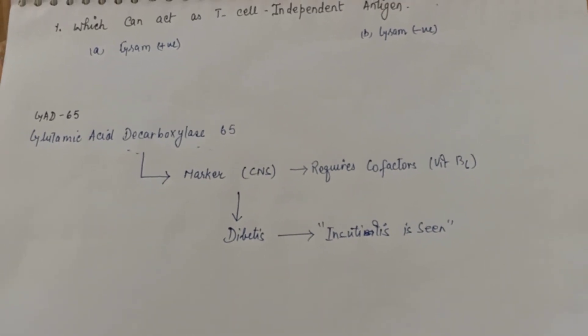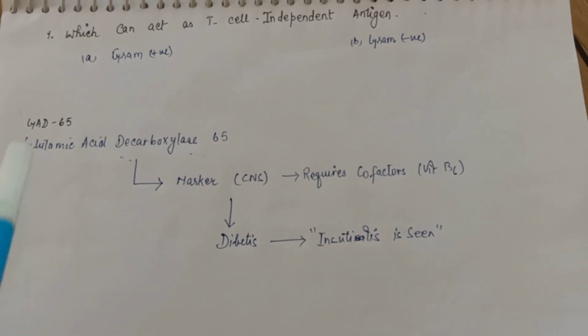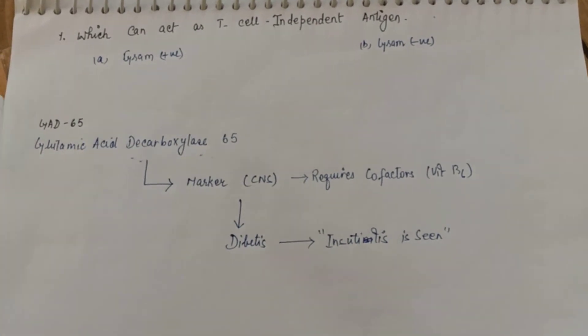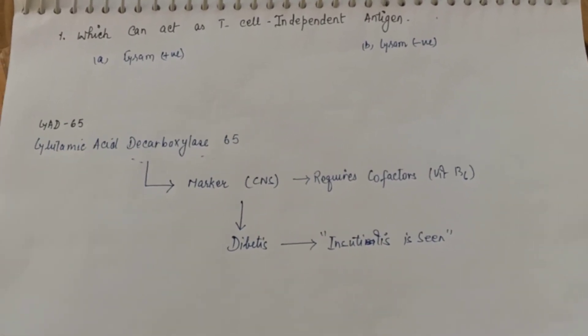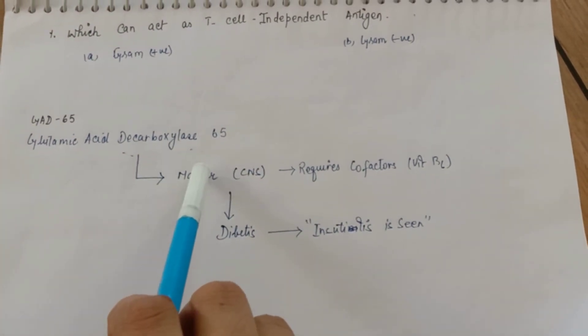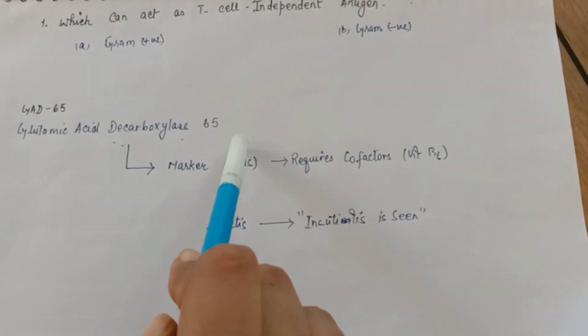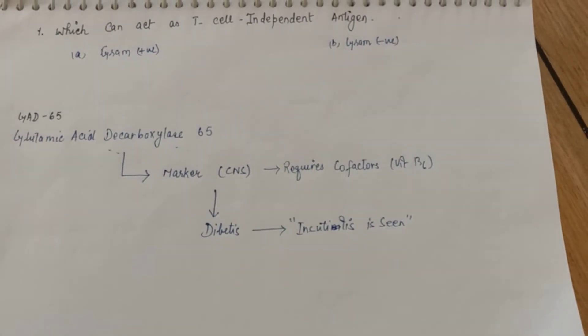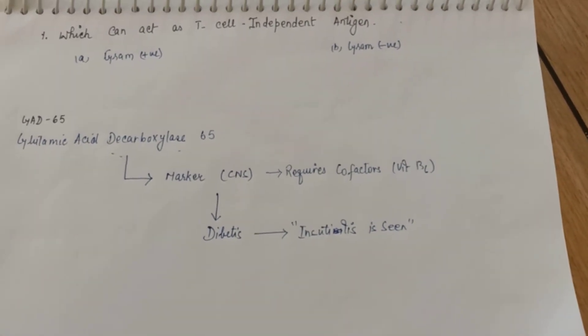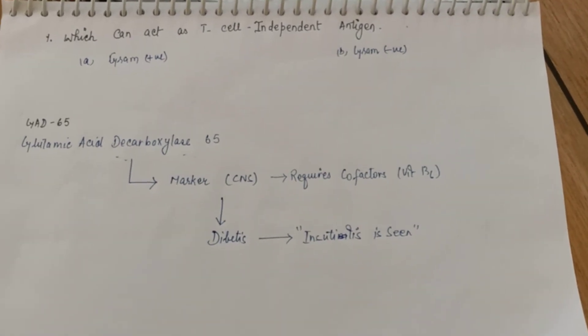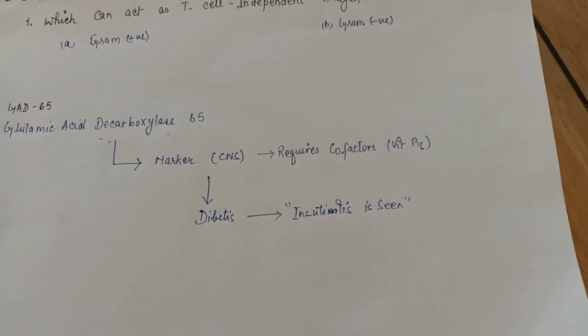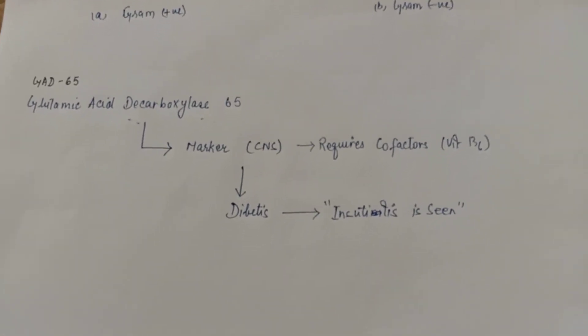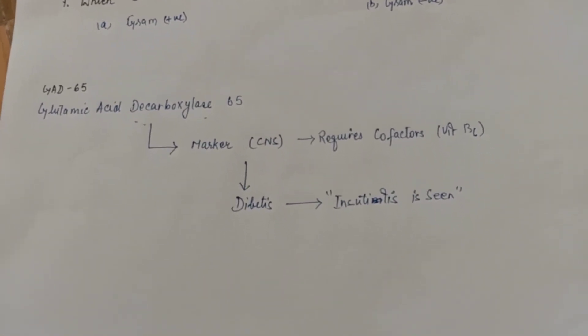From the last video there was a question. I have thought to discuss it here. The question was: can GAD65 be used to treat diabetes? First understand what is GAD65. It is glutamic acid decarboxylase 65. 65 is kilodalton, the weight of the protein. It was actually used as a marker in central nervous system diseases. Before new discoveries, it was believed that it is something which is pertinent to neurons.